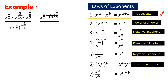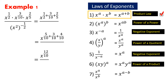Before we could add all three fractions, we need to find the least common denominator — in this case, 10. Then we rewrite each fraction accordingly. We get x to the power 12 over 10, which is also equivalent to x to the power 6 fifths.